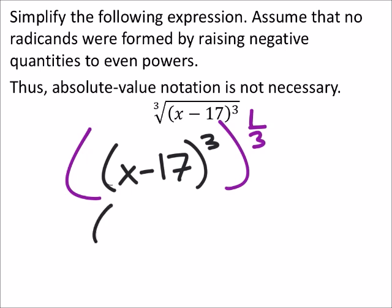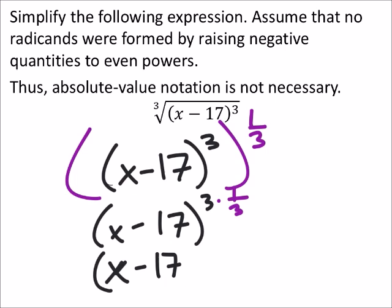So that gives us x minus 17 to the power of 3 times one-third. And if we have 3 one-thirds, it's just x minus 17 to the power of 1.